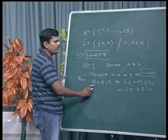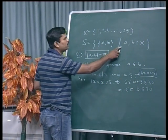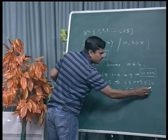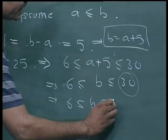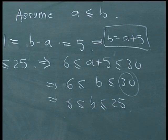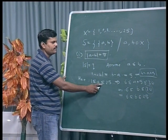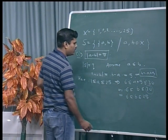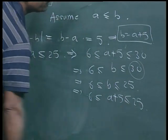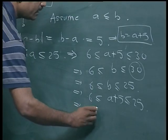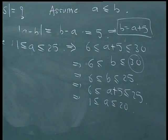So whenever b lies between 6 and 25, substituting b equal to a plus 5 and subtracting 5 from the inequality gives 1 ≤ a ≤ 20. This has only one degree of freedom: once a is chosen, b is fixed as a plus 5.